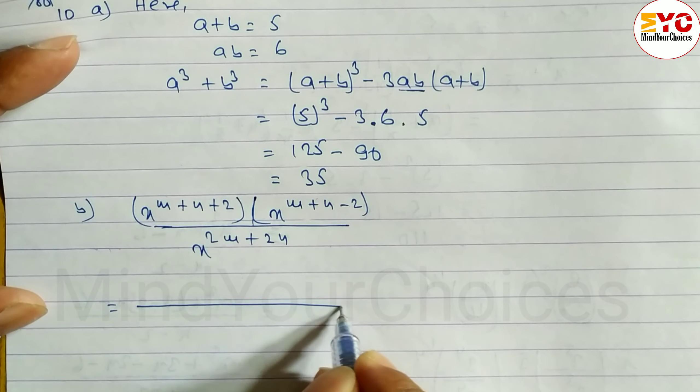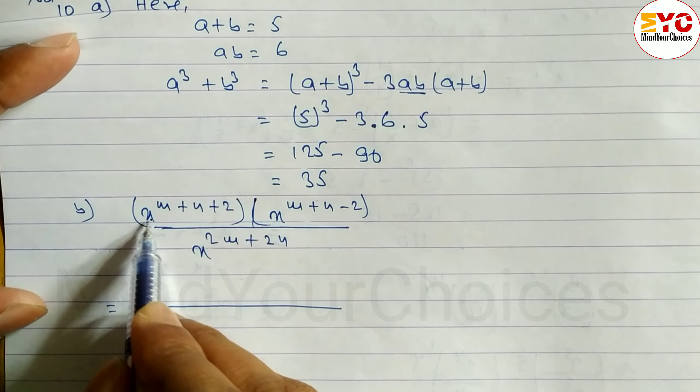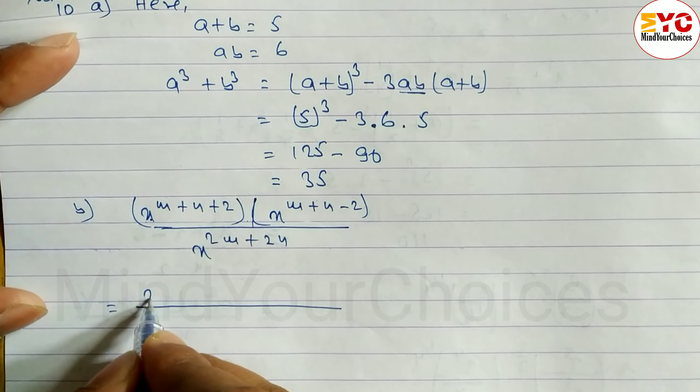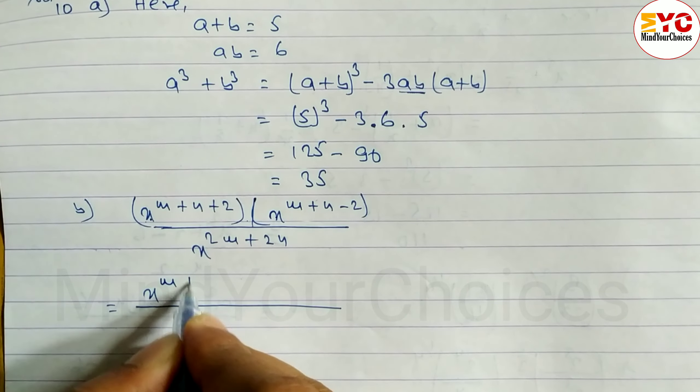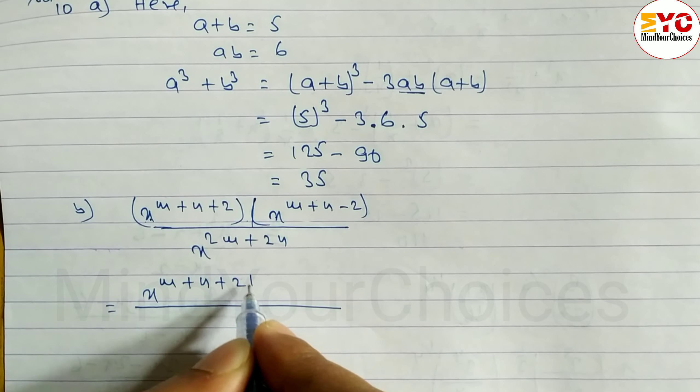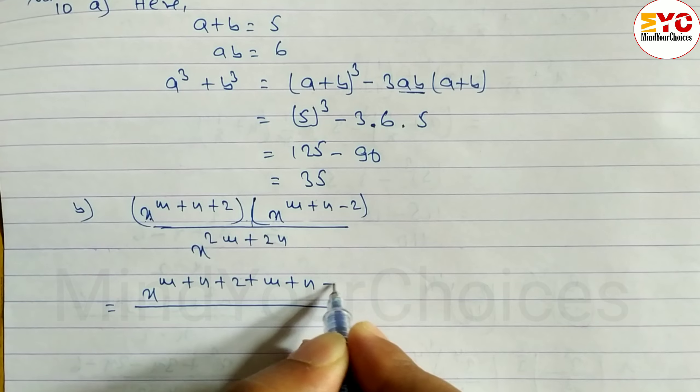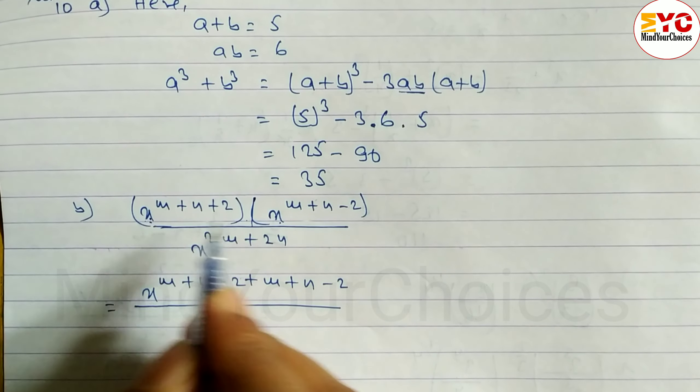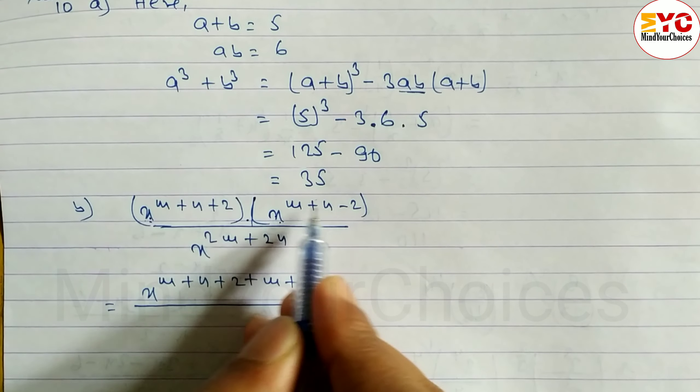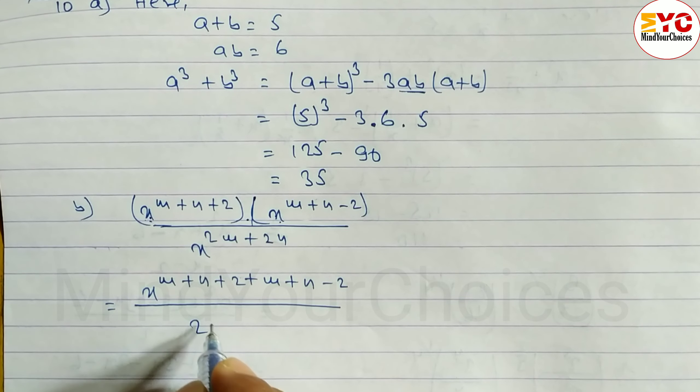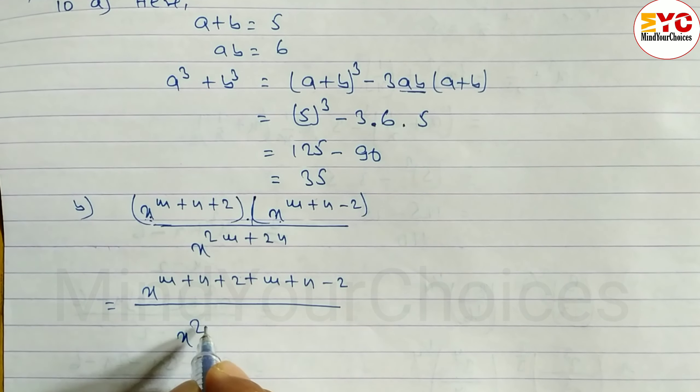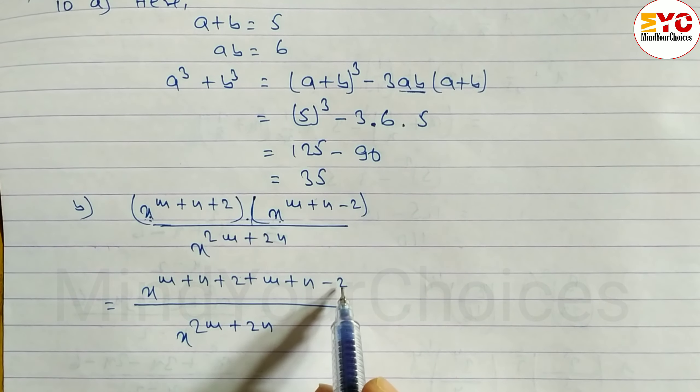You can see here, base is same. In multiplication, add the powers. So we can write here m plus n plus 2 plus m plus n minus 2. Base same, in multiply, add the powers. And remaining here, x power 2m plus 2n.